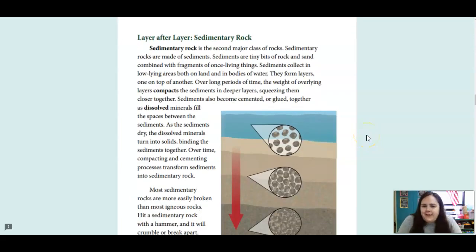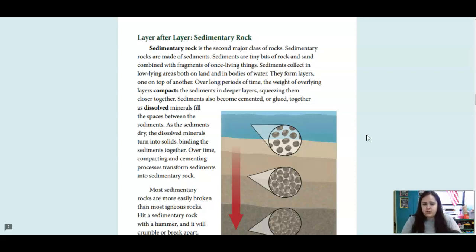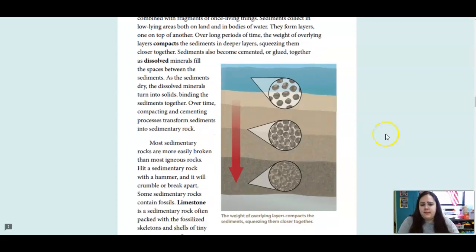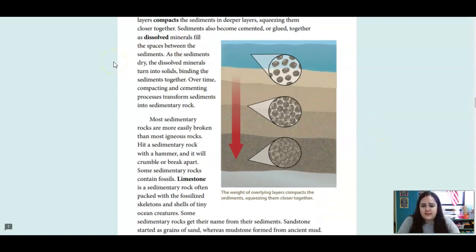Sedimentary rock is the second major class of rocks. Sedimentary rocks are made of sediments — tiny bits of rock and sand combined with fragments of once-living things. Sediments collect in low-lying areas, both on land and in bodies of water. They form layers, one on top of another. Over long periods of time, the weight of overlying layers compacts the sediments into deeper layers, squeezing them closer together. Sediments also become cemented or glued together as dissolved minerals fill the spaces between the sediments.